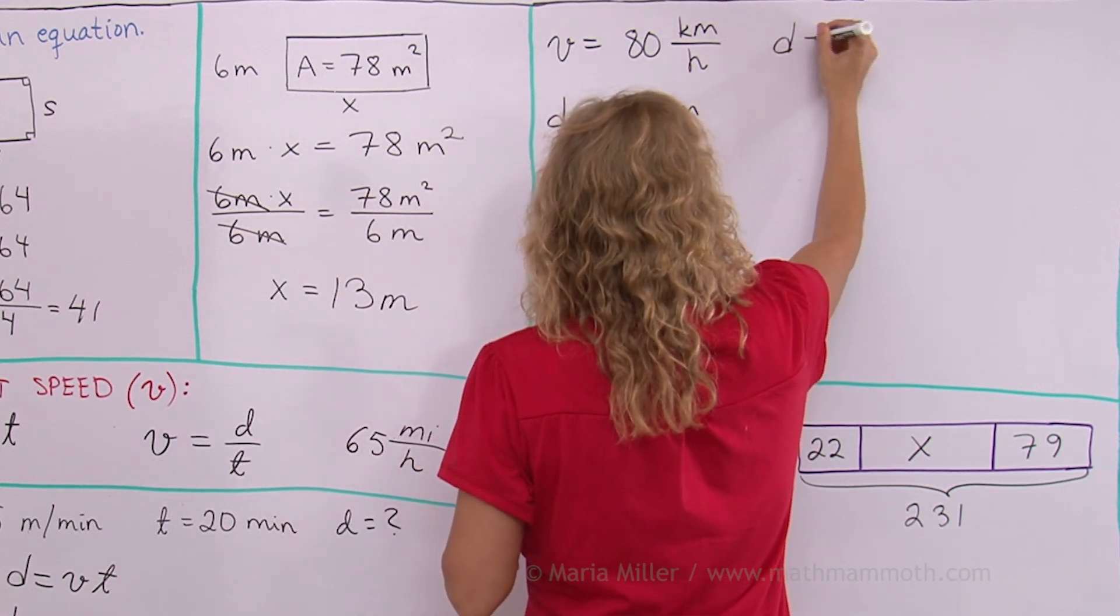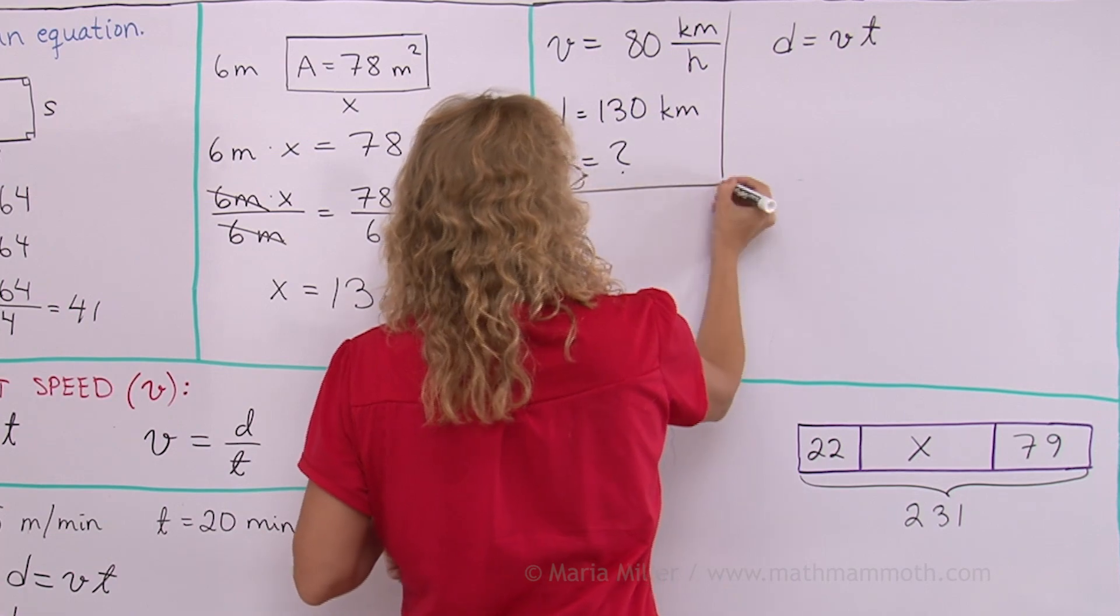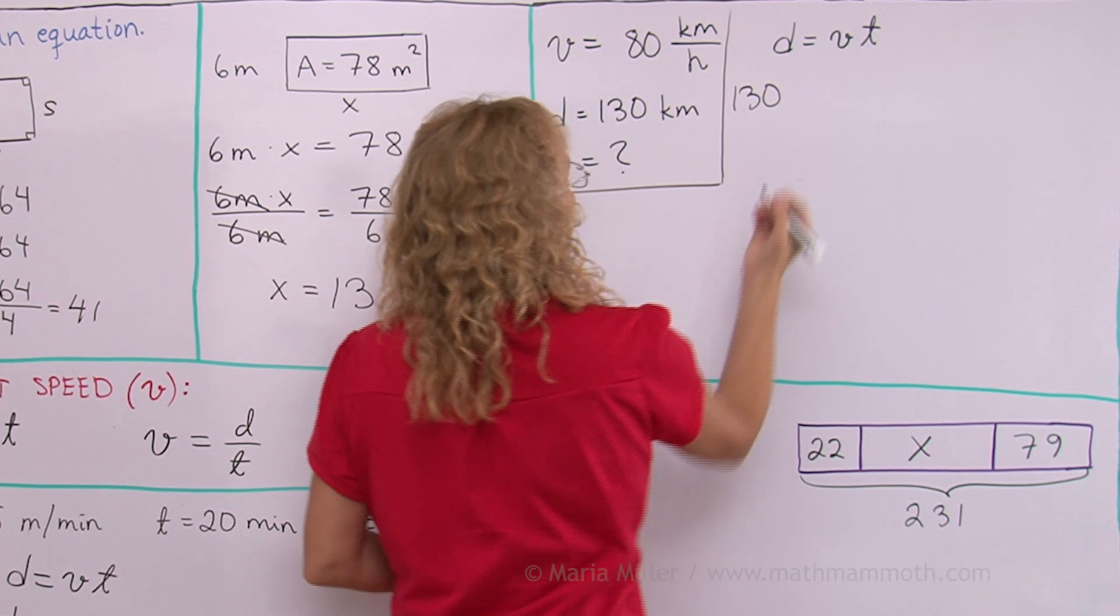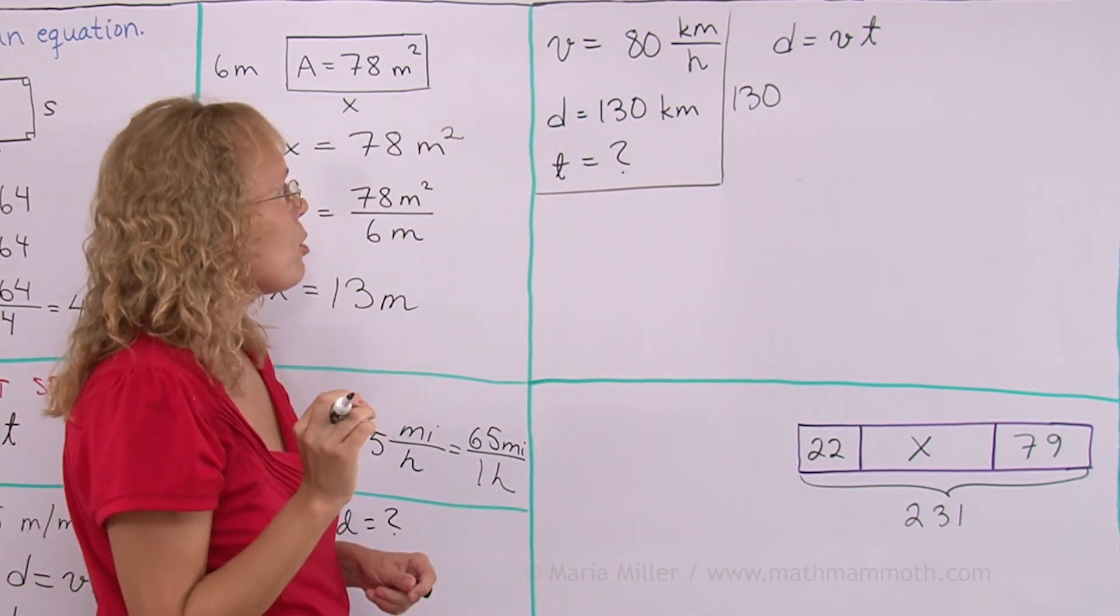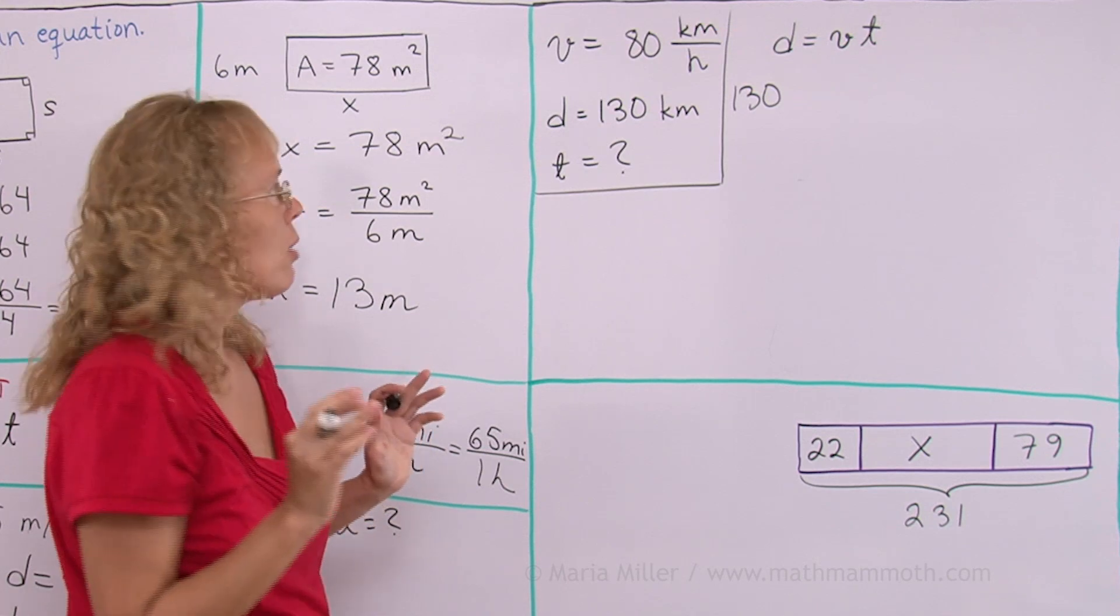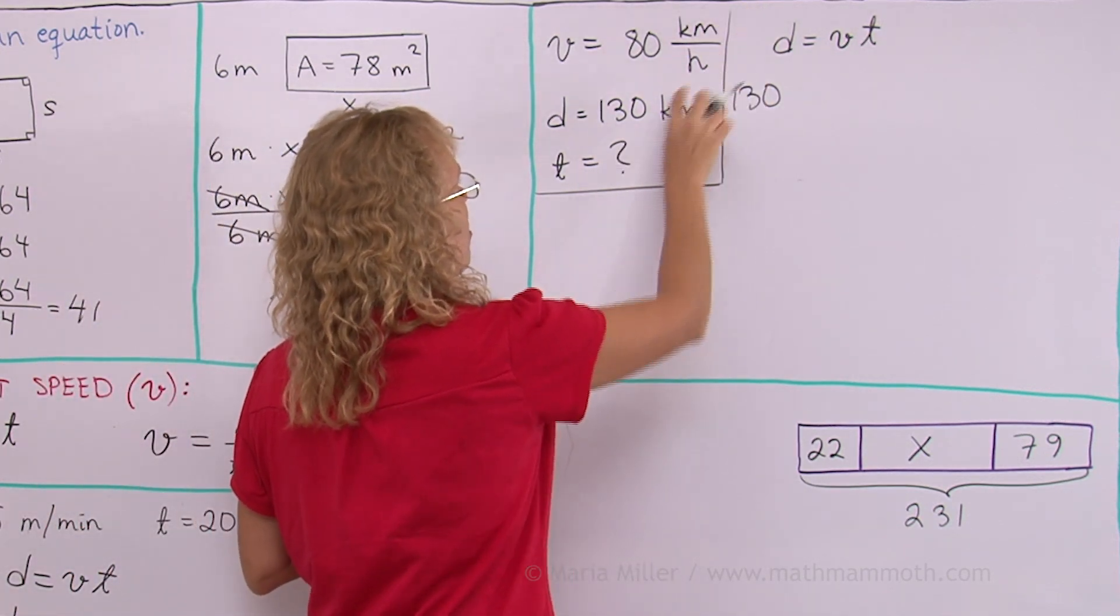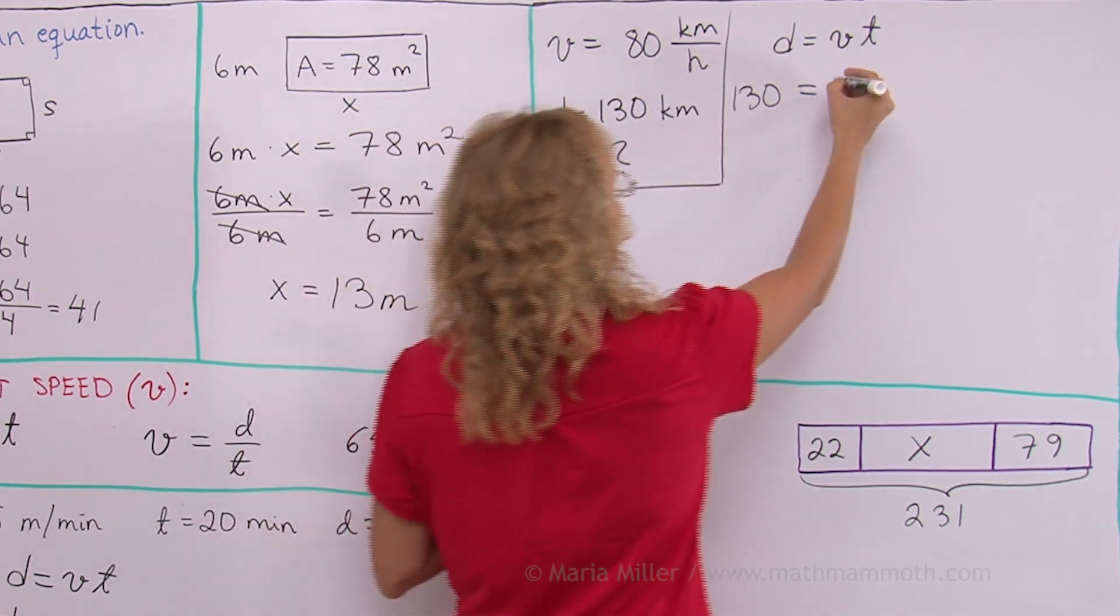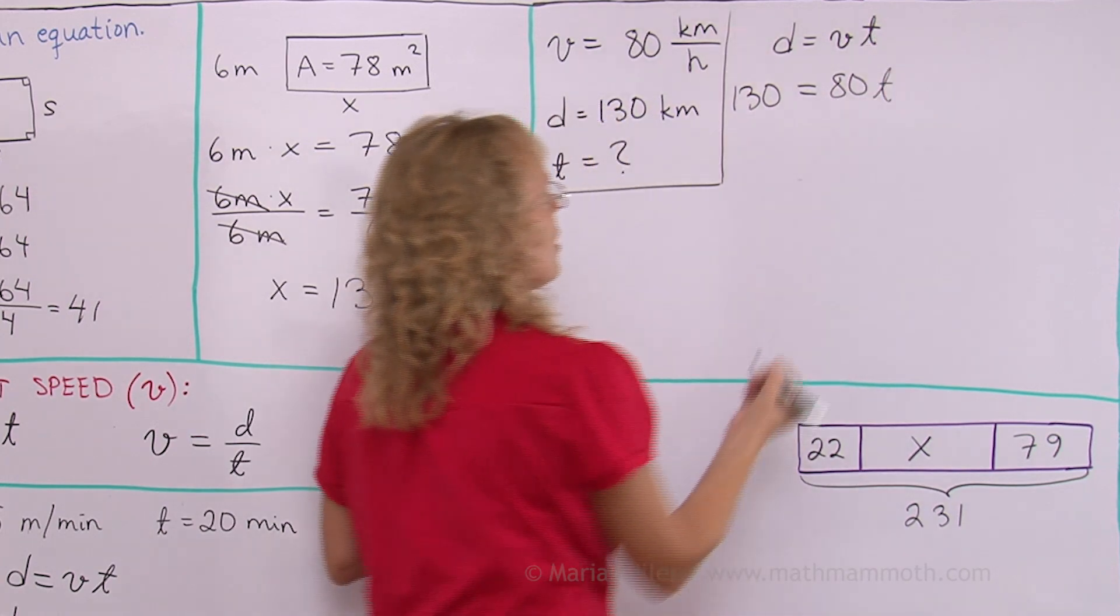So D equals V times T. And now I will substitute in place of D. I put 130. And here, if those units, kilometers and kilometers per hour confuse you, drop them out for now. Because there's kilometers per hour, kilometers. The answer will be then in hours. Velocity is 80. T, I cannot put anything in place of it, so I just write T. That's my unknown.